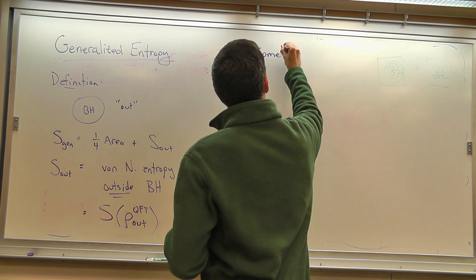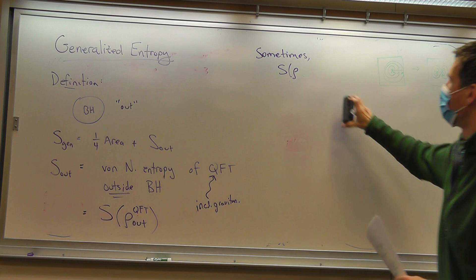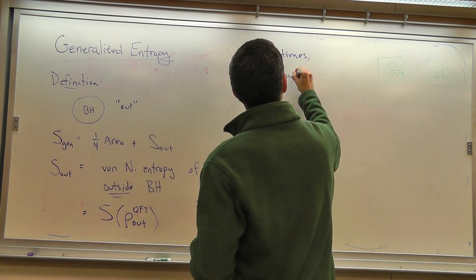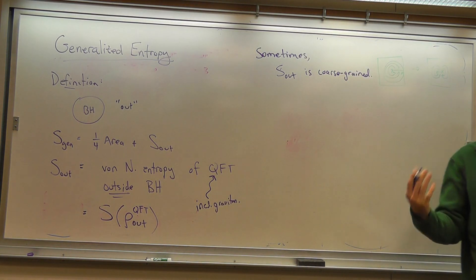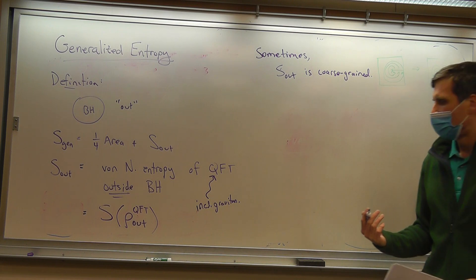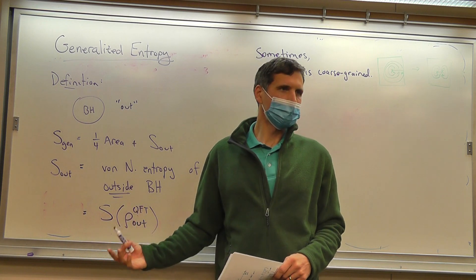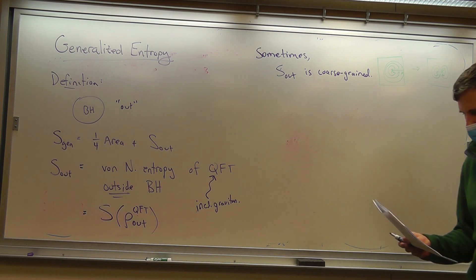Sometimes S_out is coarse-grained. In different discussions of generalized entropy, sometimes people are referring to S_out being the von Neumann entropy of the quantum fields; other times they mean more of a thermodynamic entropy. As we've discussed, the von Neumann entropy often includes a piece that is the thermodynamic entropy, but they're a little different. So we have to be careful which one we're talking about.